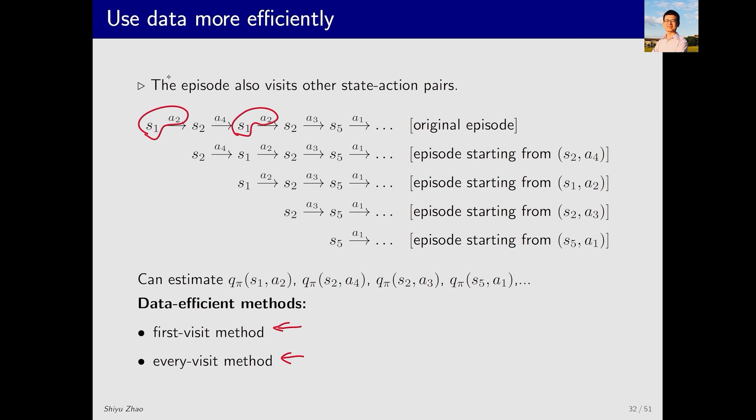It means that regardless of how many times I visit, as long as I have visited it, I can use the return of all subsequent samples to estimate the action value of S1, A2. With this method, I will estimate S1, A2 again based on the later samples.